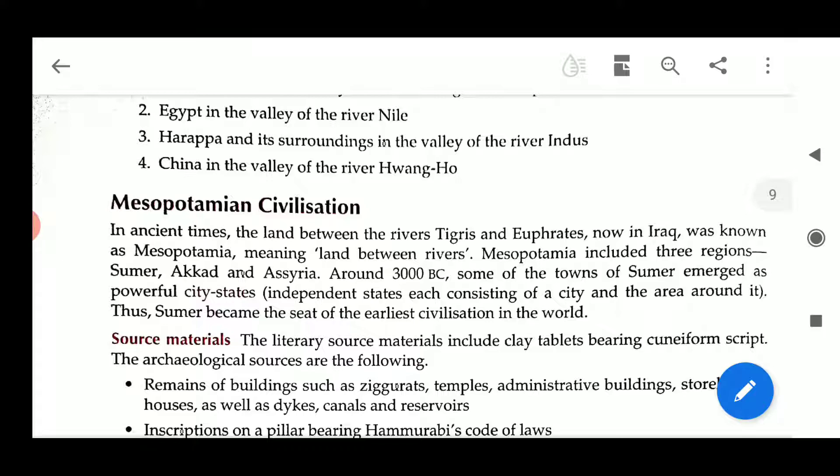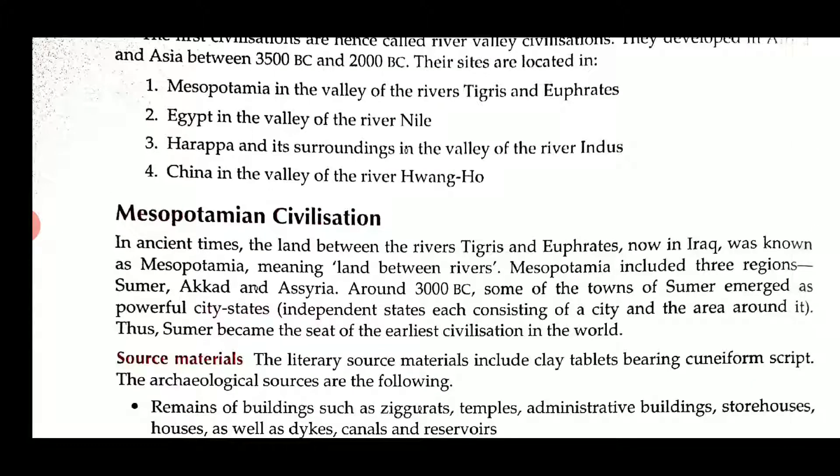Now we will study about this civilization according to our book only. In ancient times, the land between the rivers Tigris and Euphrates, now in Iraq, was known as Mesopotamia, meaning the land between two rivers.